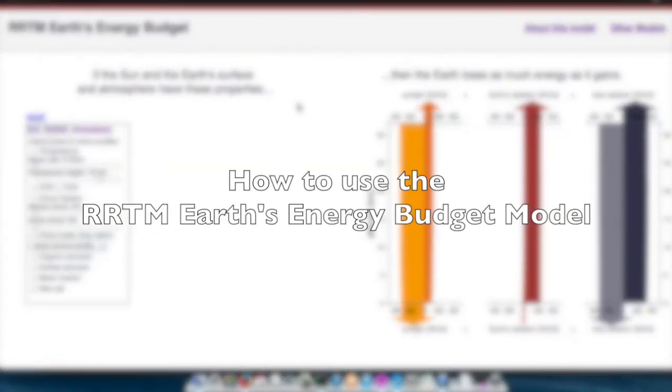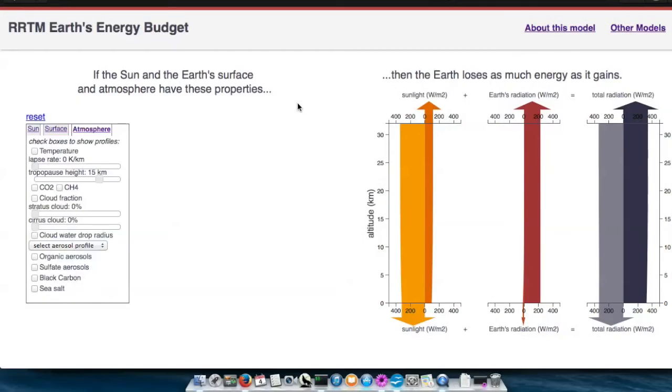In this screencast, we'll show you how to use the RTM Earth's energy budget model to estimate the quantity of energy flowing in and out of an idealized planet.